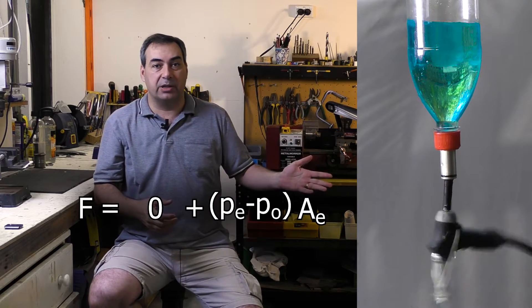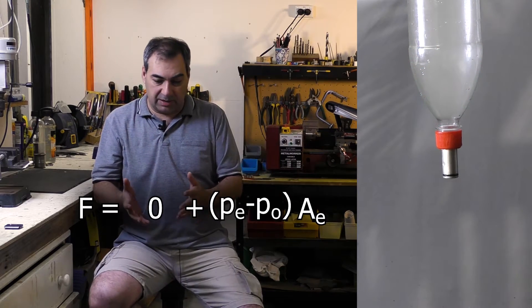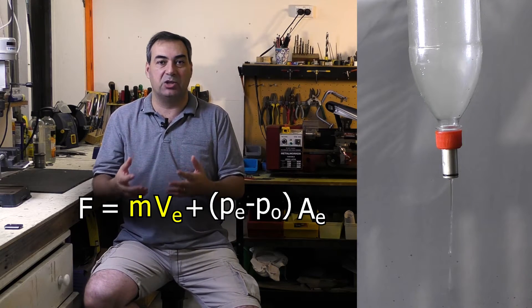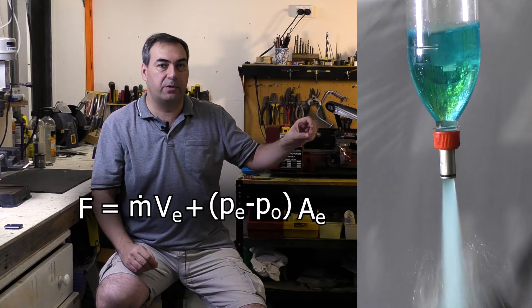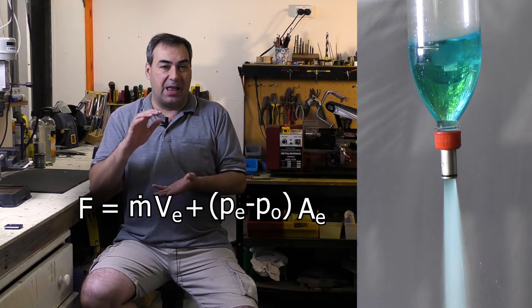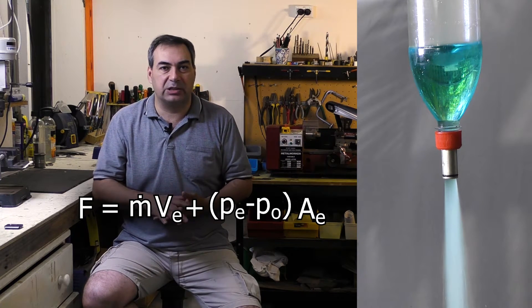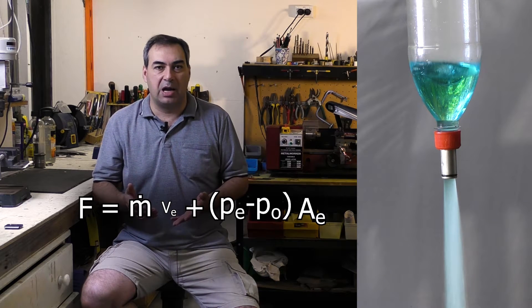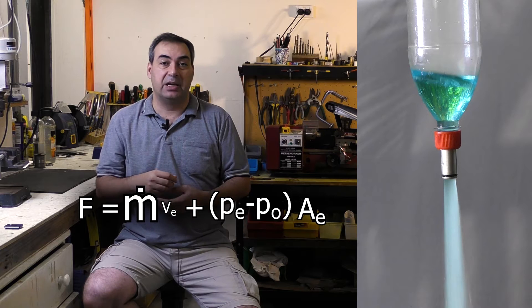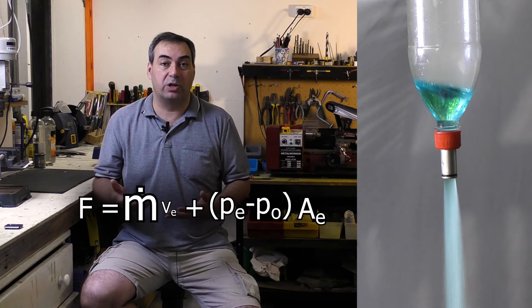So when you release the rocket, the momentum thrust comes back into play. The compressed air is pushing the water out through the nozzle and the water comes out probably about one-tenth the speed of sound for regular types of rockets which is quite low, but the mass flow rate is high because the water is so heavy.